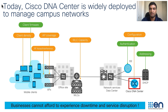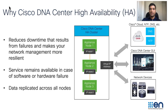With so much running on Cisco DNA Center, it is imperative to provide redundancy capability so that when one appliance fails, another can automatically take over with very minimal impact. Here's why high availability is needed. Cisco DNA Center's HA framework is intended to minimize downtime that results from failures and makes your network management more resilient when they take place. When a failure occurs, this framework helps to restore your network to its previous operational state.